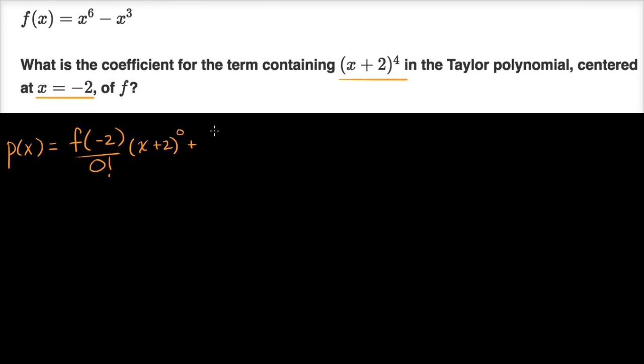Then you're going to have plus the first derivative evaluated at negative two divided by one factorial, which is still just one, times (x+2) to the first power, plus the second derivative evaluated at negative two over two factorial times (x+2) squared. I think you see where this is going.